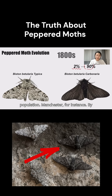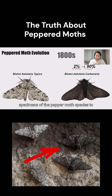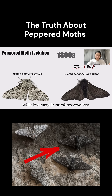In Manchester, for instance, by 1895, they reported 98 percent of all specimens of the peppered moth species to be melanic — i.e., darker moths — while the numbers were less pronounced for rural areas.